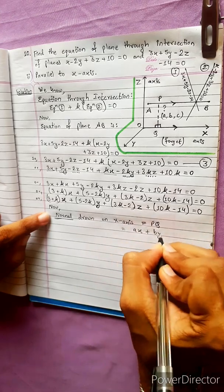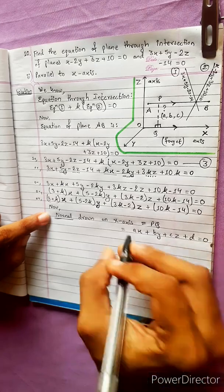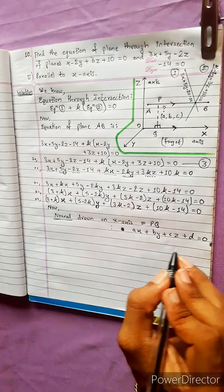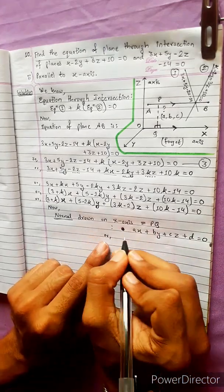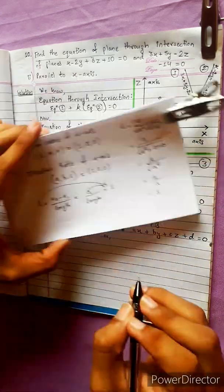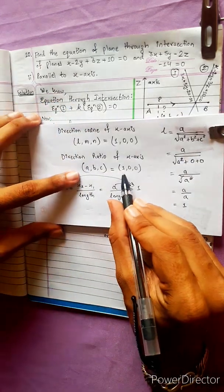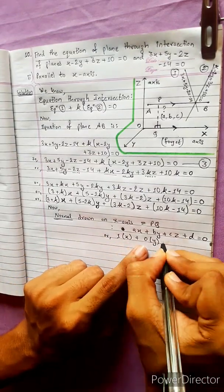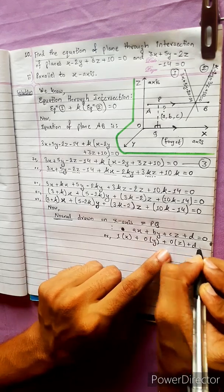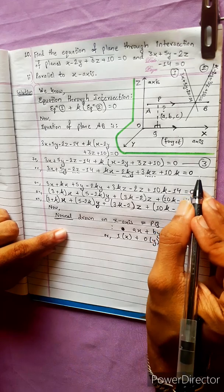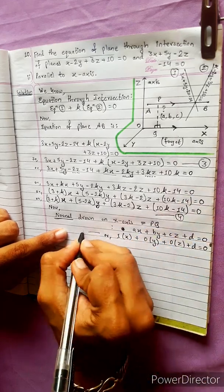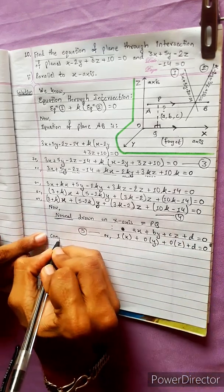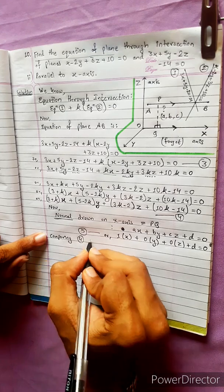The plane PQ has equation AX plus BY plus CZ plus D equal to zero. This is the standard plane equation for PQ. Since PQ is normal to the x-axis, we apply the perpendicularity condition. The x-axis gives direction (1, 0, 0), so the equation becomes 1 times A plus 0 plus 0 equal to zero. Comparing equations 4 and 5.